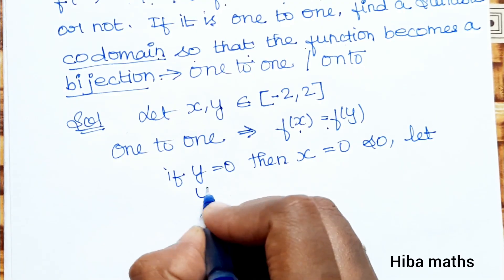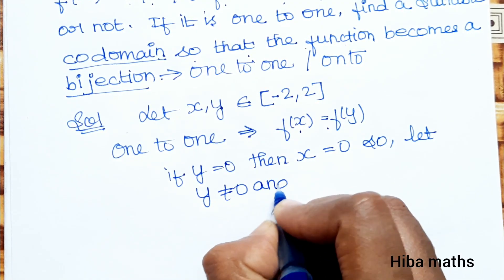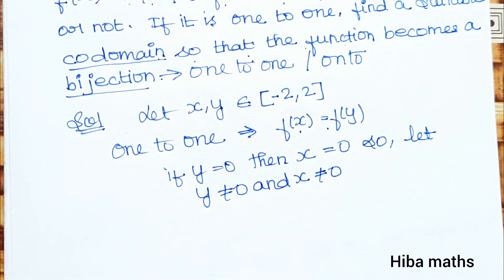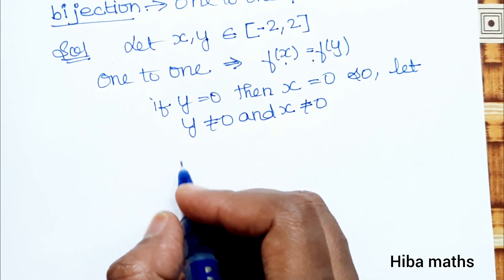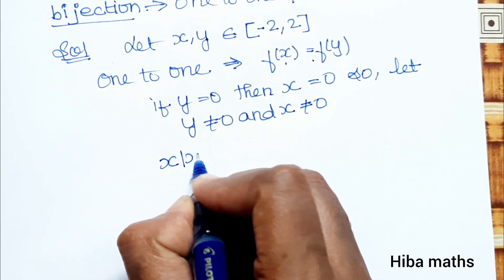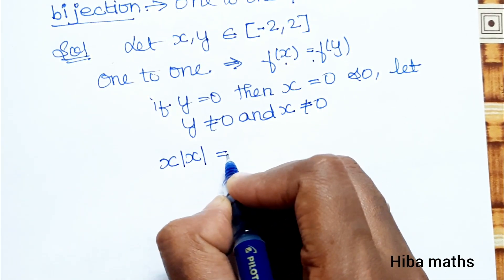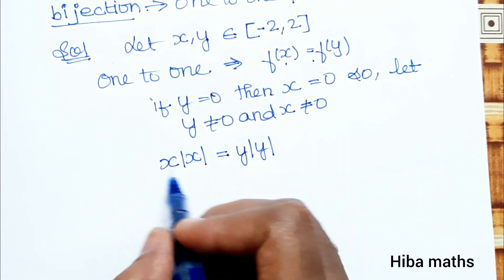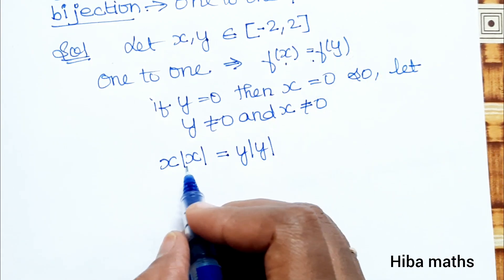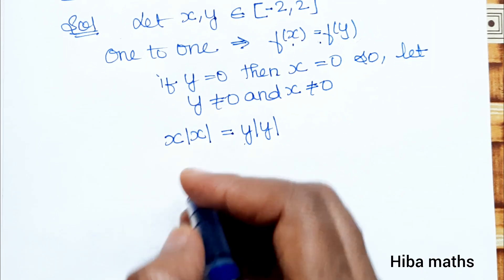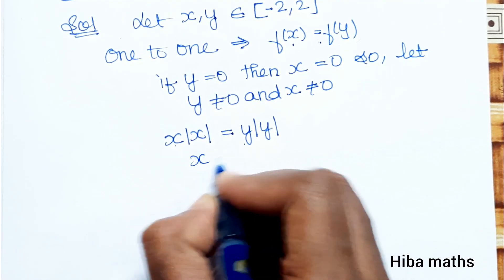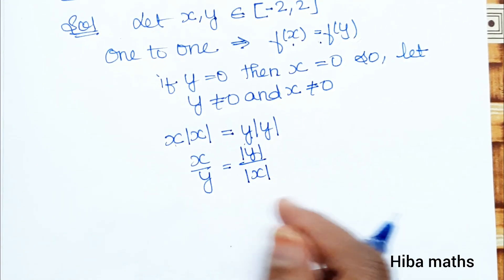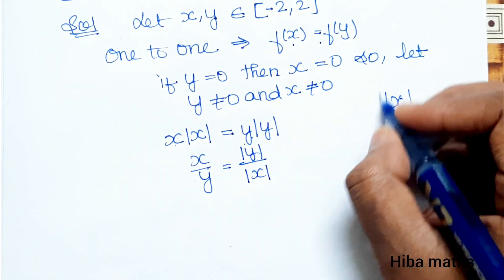Now let y ≠ 0 and x ≠ 0. We first eliminate 0 from the domain [-2, 2]. Applying f(x) = f(y): x/|x| = y/|y|. Rearranging, x/|x| minus y/|y| equals 0, which gives x·|y| minus y·|x| = 0.